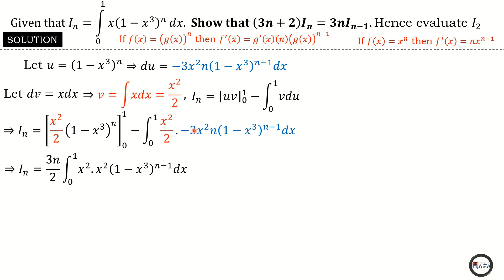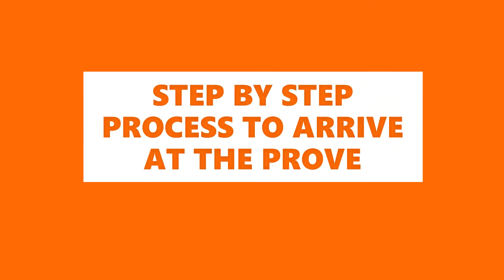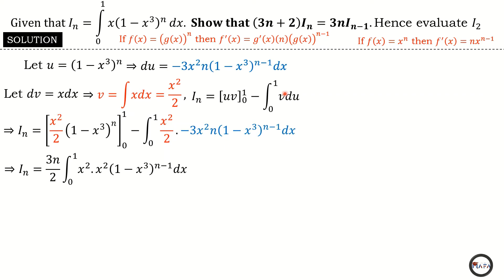We pull out the constants — terms that do not depend on x — so we have negative three n divided by two. The negative outside multiplies with negative three n divided by two to give three n divided by two. We are left with x squared times x squared times the remainder of the function (1 minus x cubed) raised to the power n minus one inside the integral. Things become complicated as we try to reach the proof.